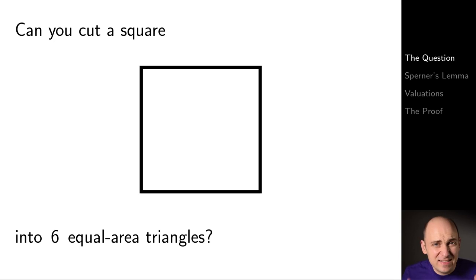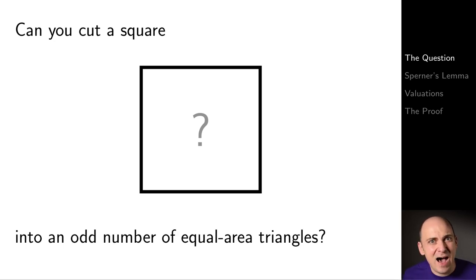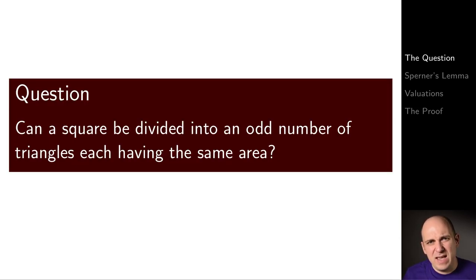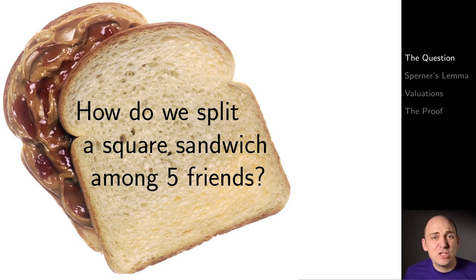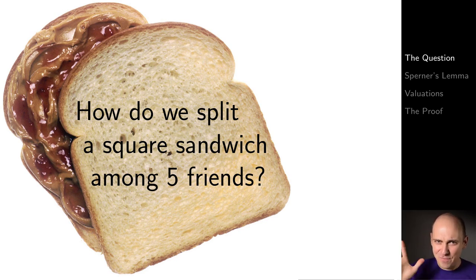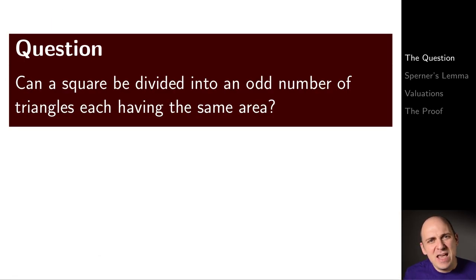What about into six equal area triangles? Yes! What about into three equal area triangles, or into five equal area triangles? Can you cut a square into any odd number of triangles each having the same area? So that's our question for today: can a square be divided into an odd number of triangles each having the same area? This is a question that could have been asked 2,000 years ago, and it even has the modern application of trying to split a square sandwich among five friends.